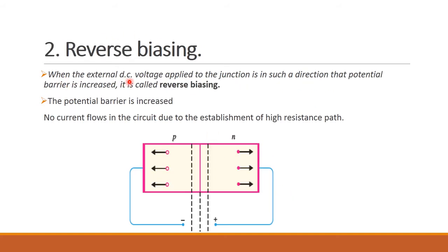Next, reverse biasing. Reverse biasing means P-type semiconductor is connected to the negative terminal of the battery, and N-type semiconductor is connected to the positive terminal. The holes are attracted towards the negative charge, and the electrons are attracted towards the positive charge. The depletion region width gets increased, there is no flow of current, the potential barrier is increased, and the resistance also gets increased. This process is called reverse biasing.